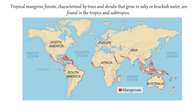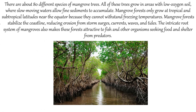Tropical mangrove forests, characterized by trees and shrubs that grow in salty or brackish water, are found in the tropics and subtropics. There are about 80 different species of mangrove trees. All of these trees grow in areas with low oxygen soil where slow moving waters allow fine sediments to accumulate. Mangrove forests only grow at tropical and subtropical latitudes near the equator because they cannot withstand freezing temperatures.